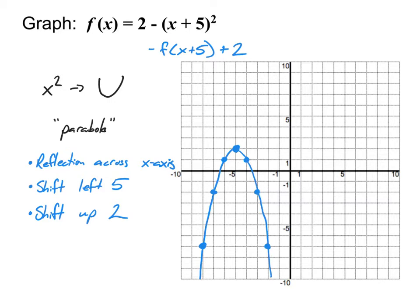If you're submitting this on the computer, you won't have to plot all those points for the graph to show up. In that case, you'd plot your vertex and then just one other point — over 1 down 1, or over 2 down 4. Graphing on the computer makes life a little easier because you don't have to worry about every single point.